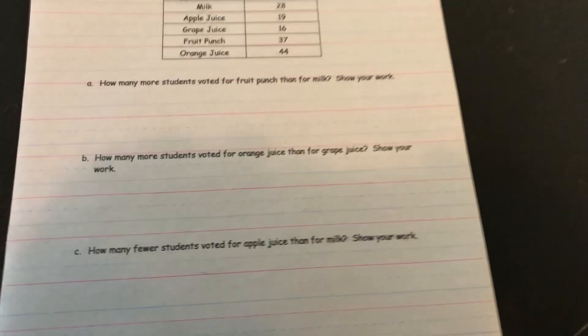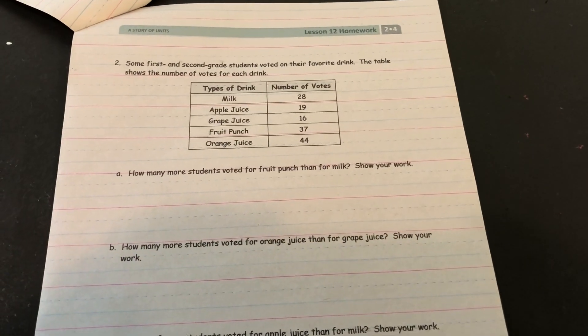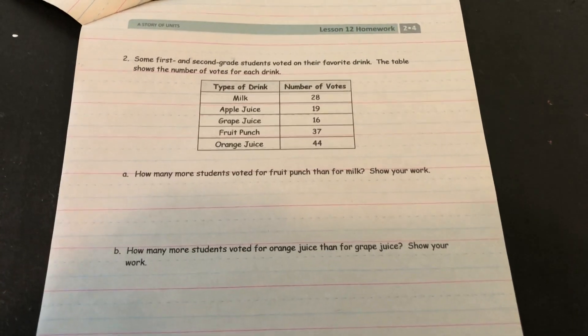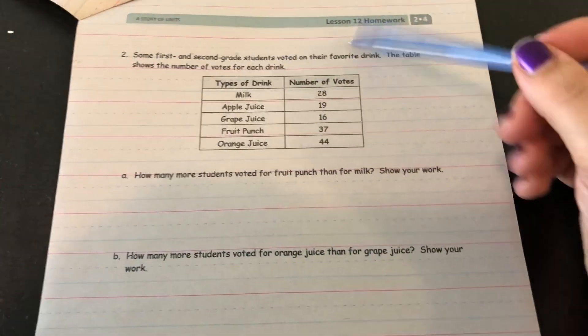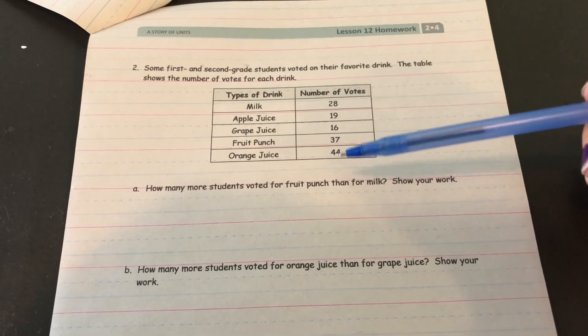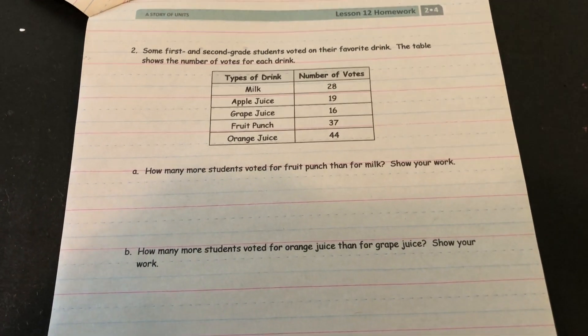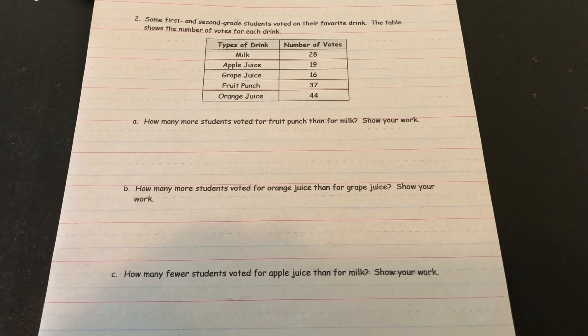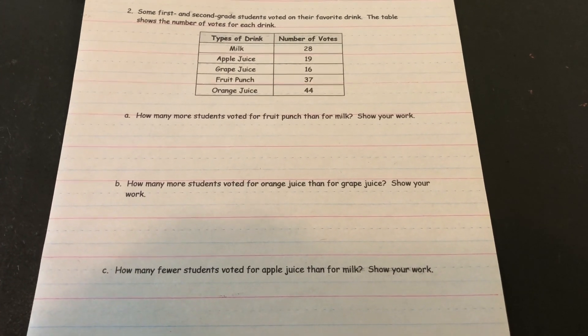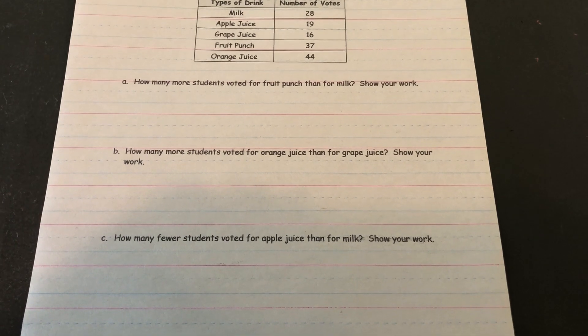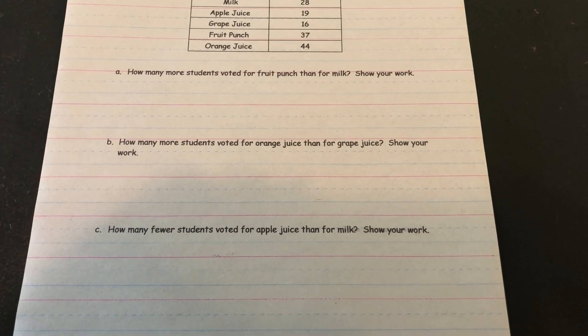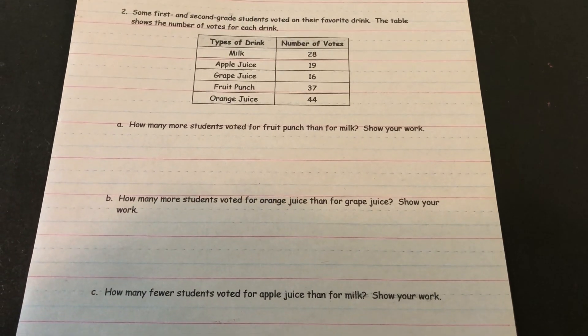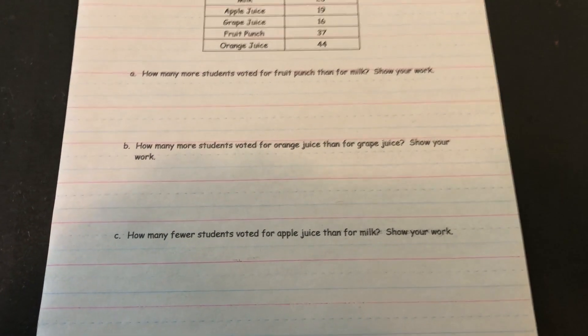Alright. For the second page, it says, some first and second grade students voted on their favorite drink. The table shows the number of votes for each drink. So these are all the different types of drink and these are the number of votes each one got. And they're asking you a few different questions about it. So when you solve these questions, I would solve them with a place value chart, and then double check your work with your standard form. But the choice is yours on how you want to solve them.